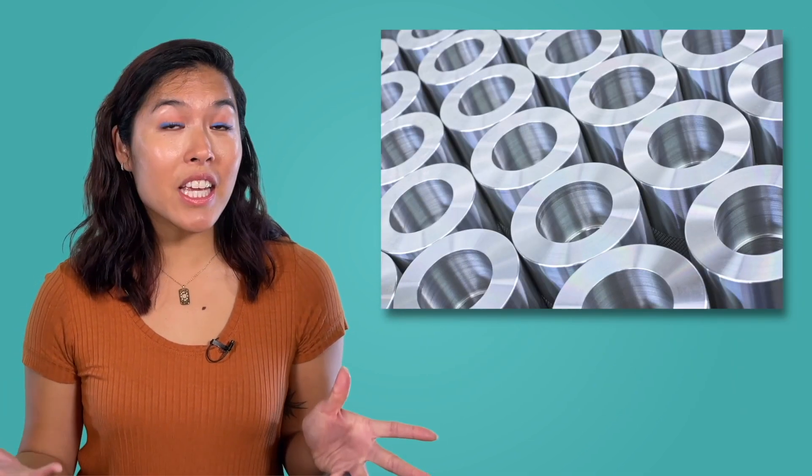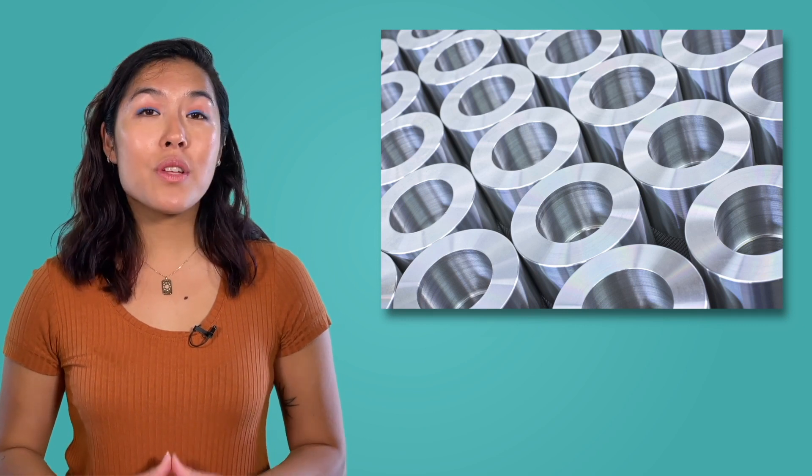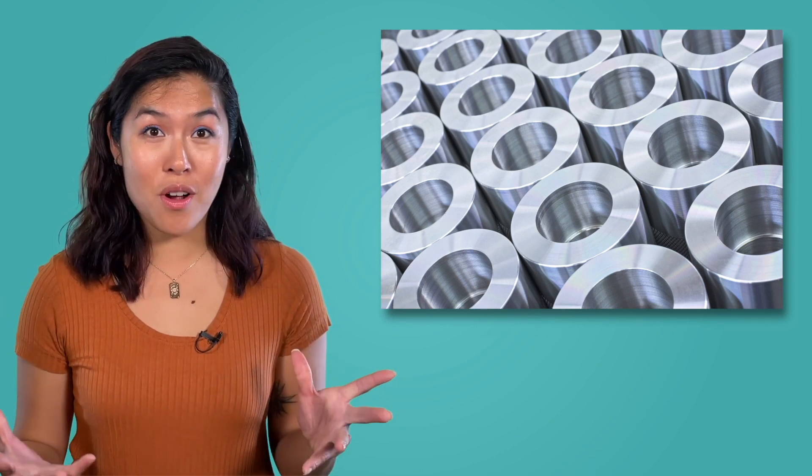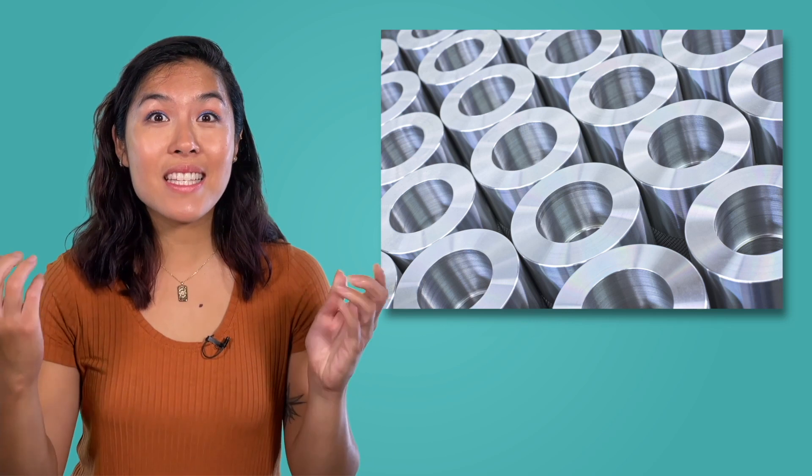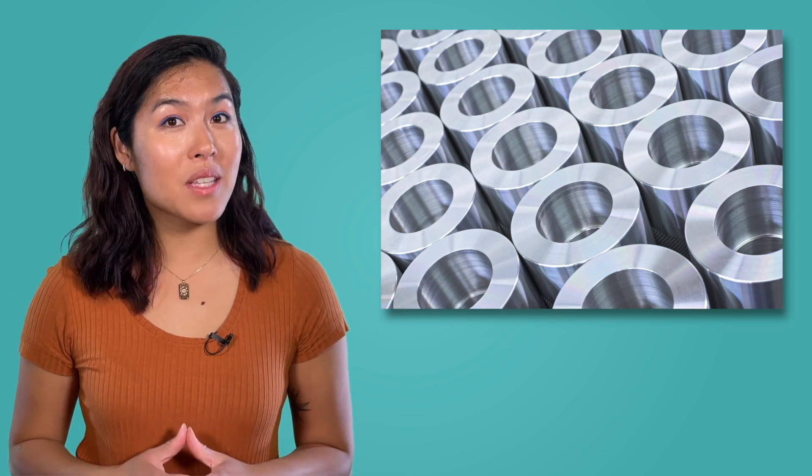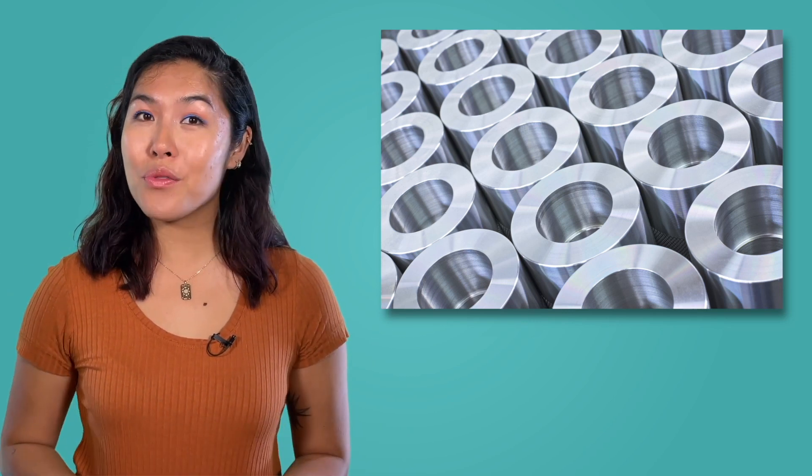Finally, metals are often described as being shiny or having luster. This property is due to the ability of the sea of electrons to absorb and release light, which then appears as shine on the surface of the metal.